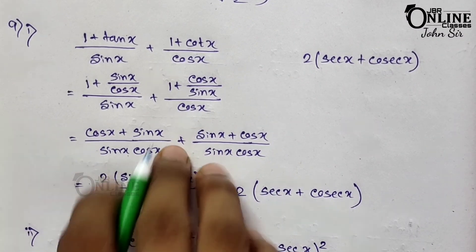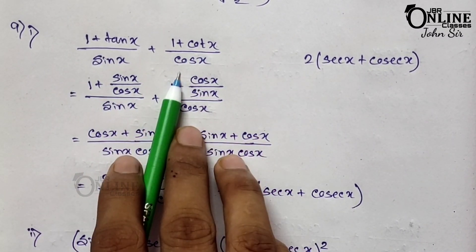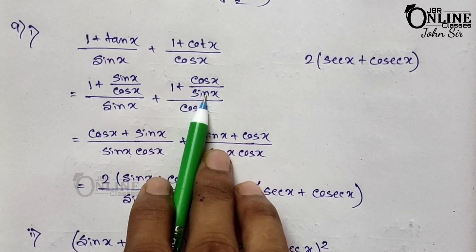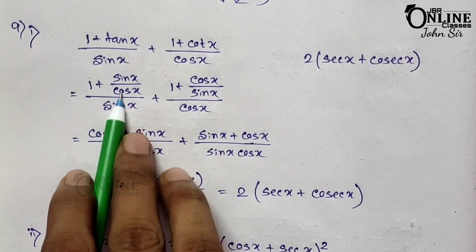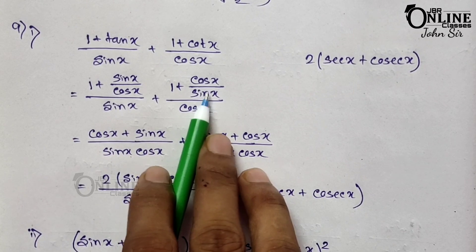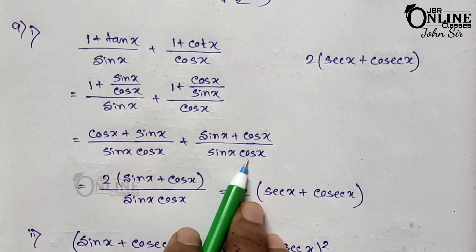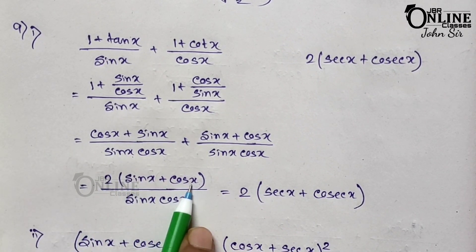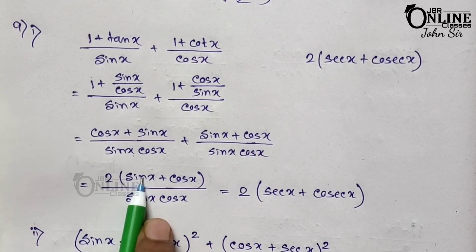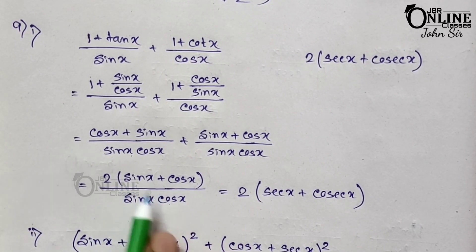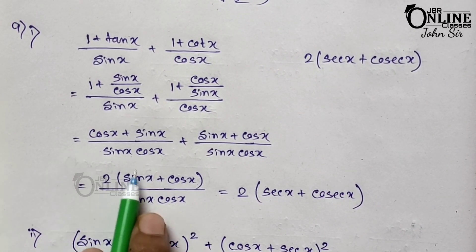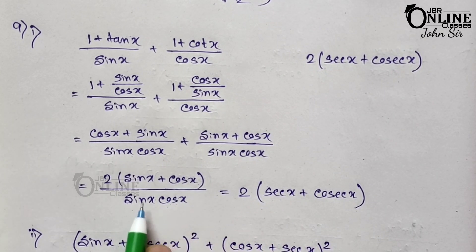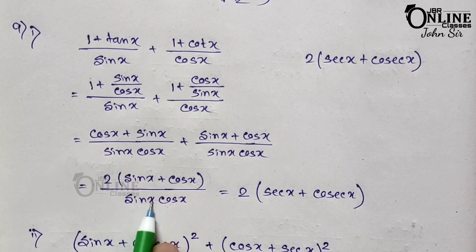Sum number 9.1: (1 + tan x)/sin x + (1 + cot x)/cos x. Change tan x to sin x/cos x and cot x to cos x/sin x. Using LCM, the first fraction becomes (cos x + sin x)/(sin x·cos x) and the second also becomes (sin x + cos x)/(sin x·cos x). Adding gives 2(sin x + cos x)/(sin x·cos x). Separating: 1/cos x = sec x and 1/sin x = cosec x, giving sec x + cosec x, proved.